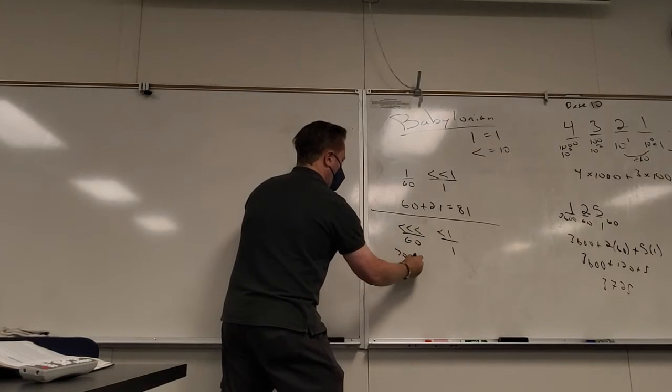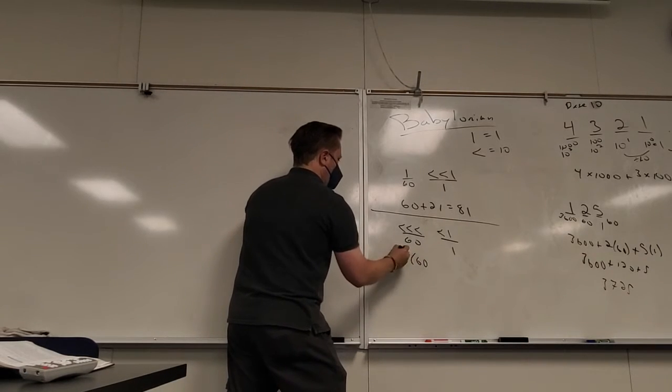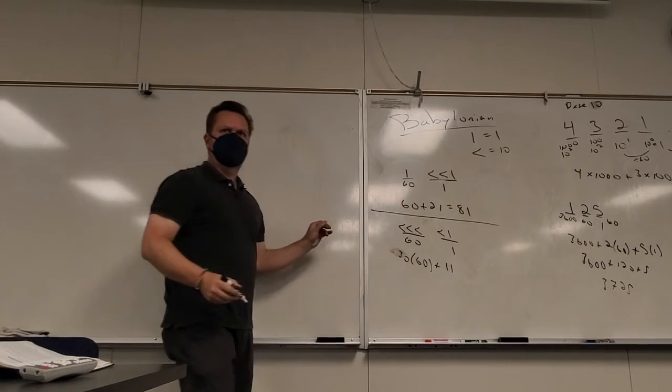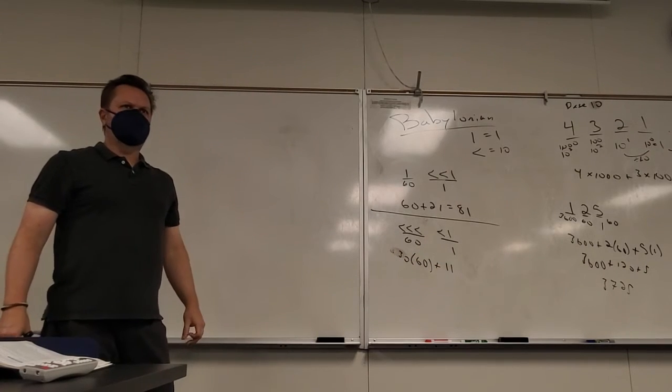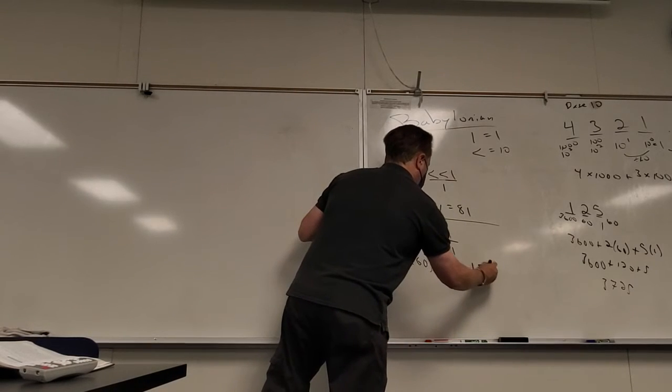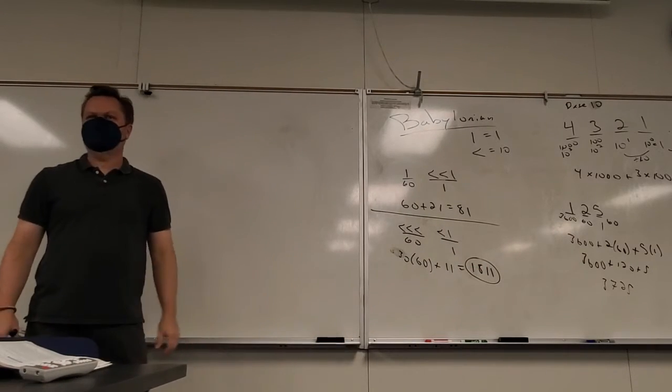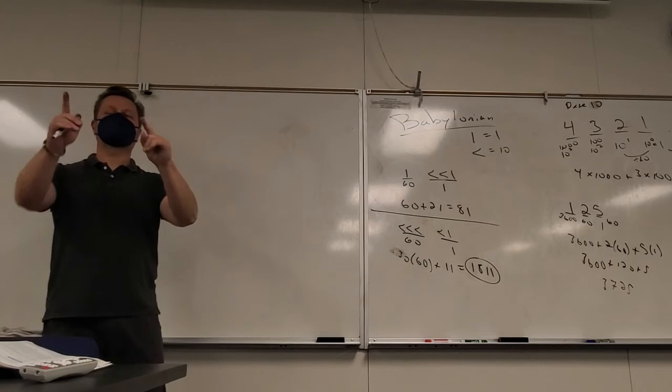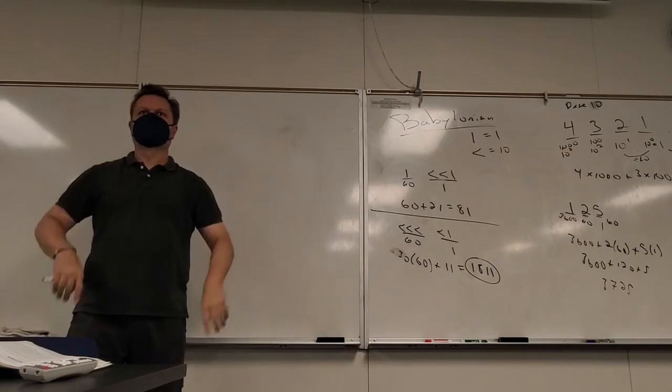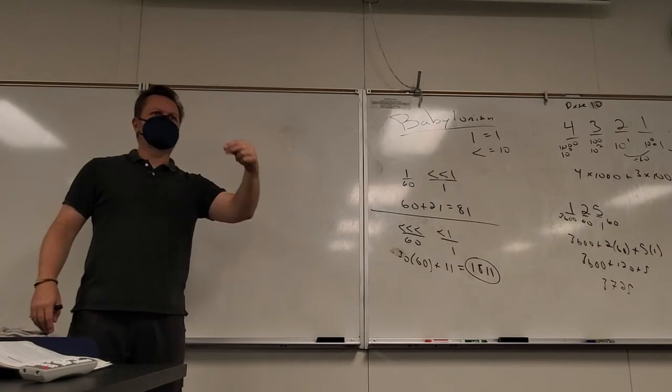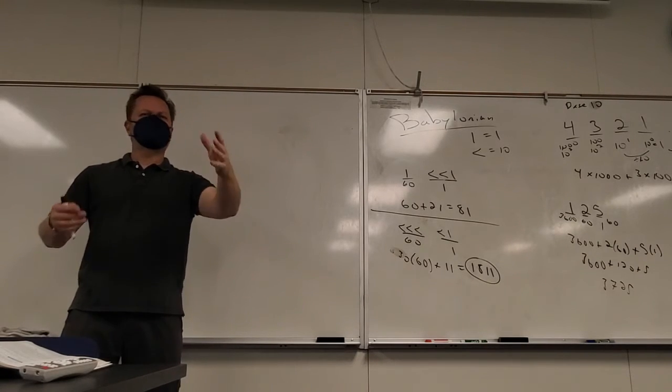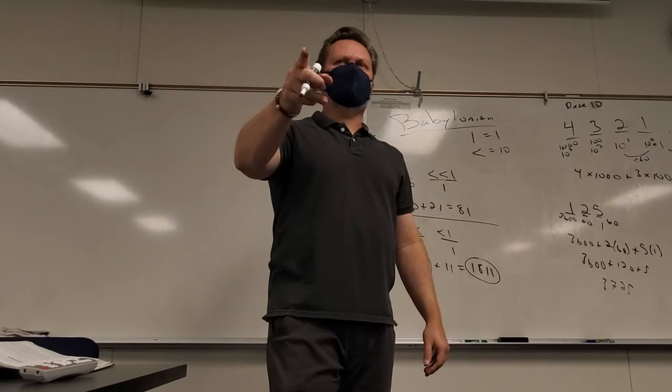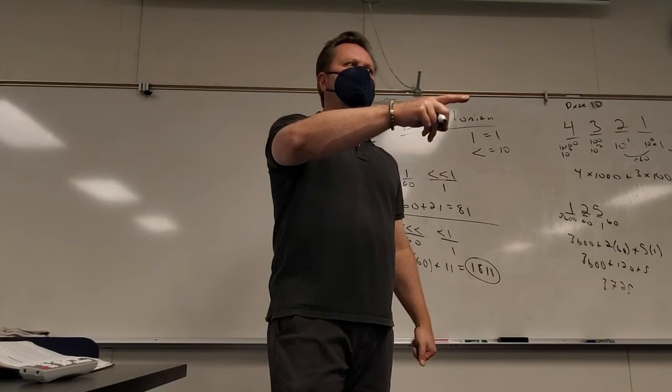So let's say I add a one and then I add this. Those are two places, right? Can somebody tell what that number is? What is that? So what place is it in first? It's in the ones place. It's the first place. So notice the Babylonians can put a bunch of stuff in one place.